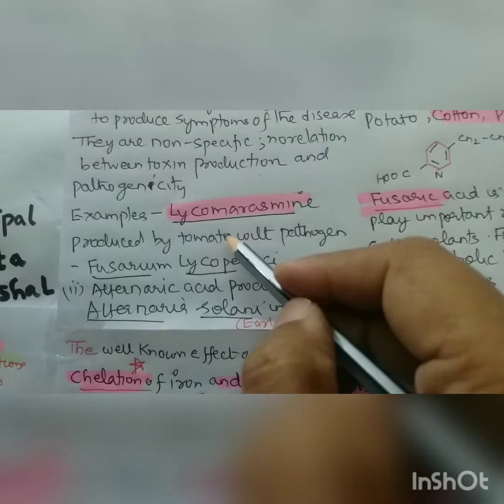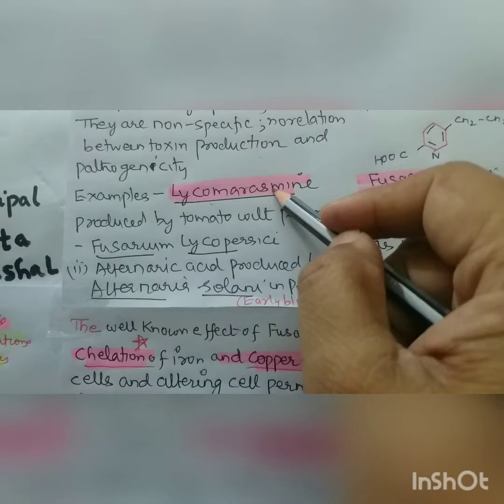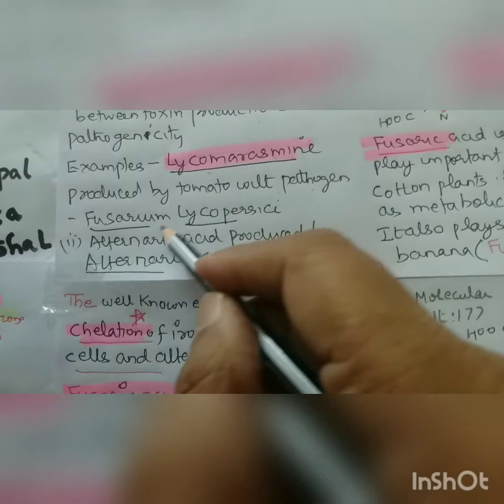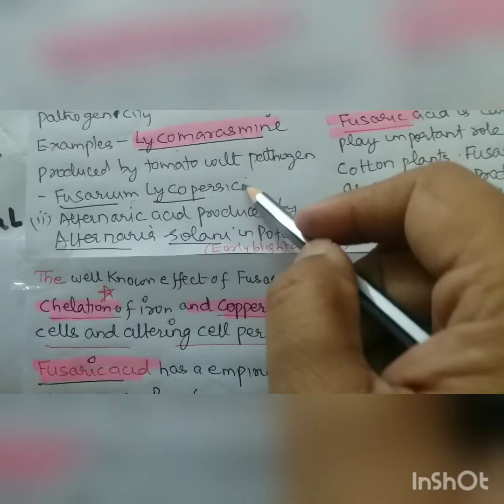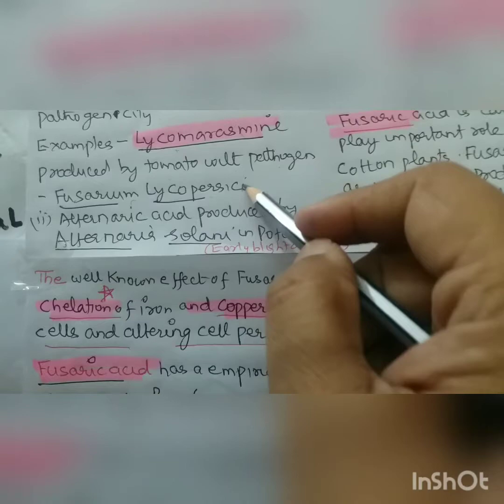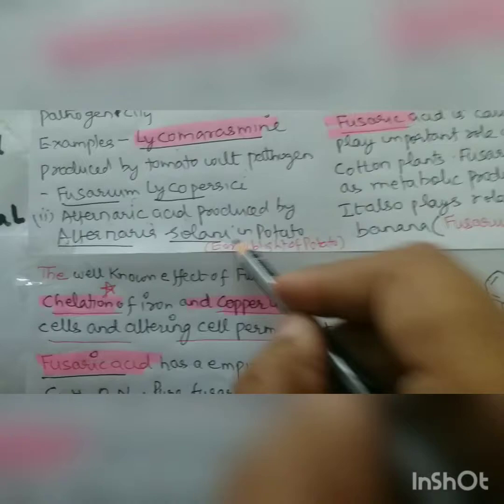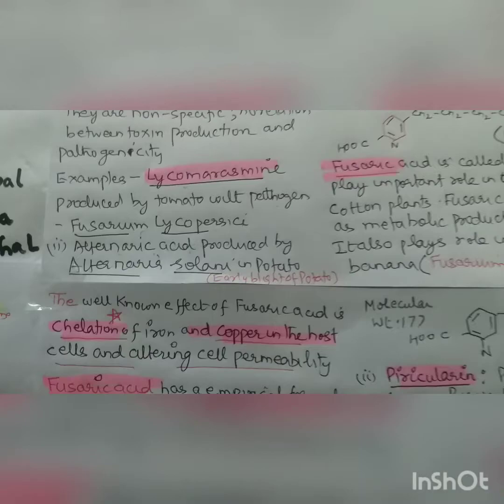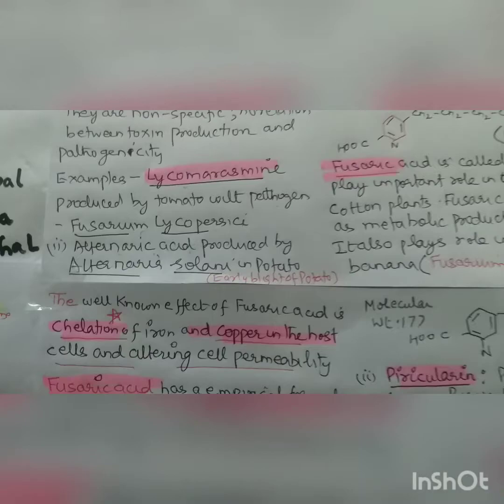Examples of phytotoxins: first is lycomerismine, produced by the tomato wilt pathogen Fusarium oxysporum f. sp. lycopersicae. Second is alternaric acid, produced by Alternaria solani and causing early blight of potato — we already discussed the target-board effect with shot holes.